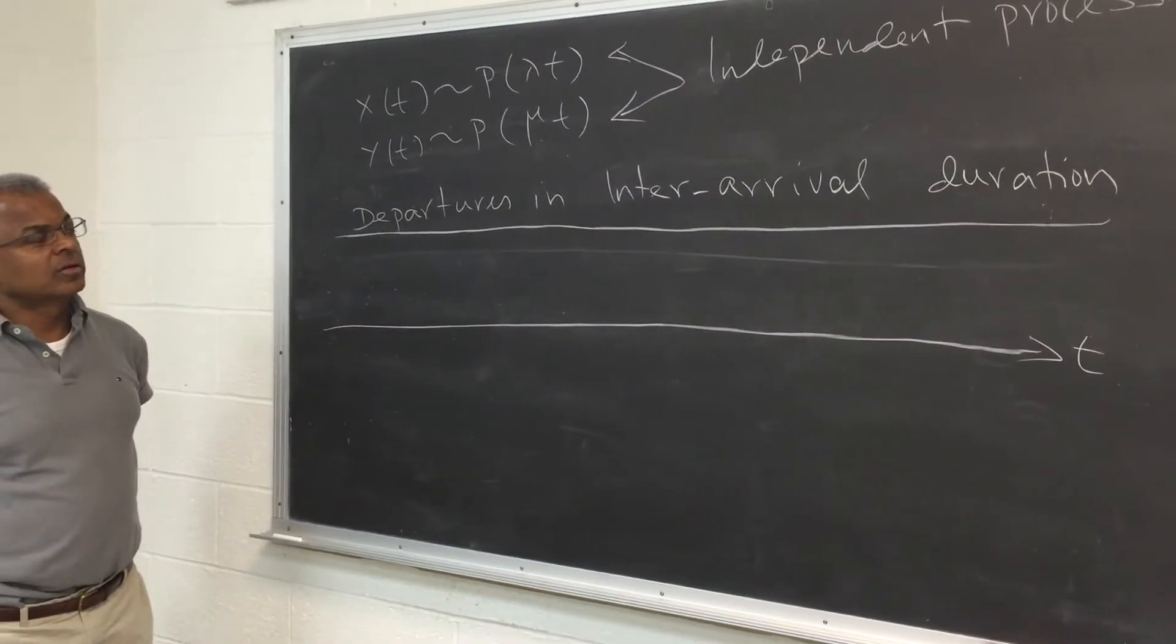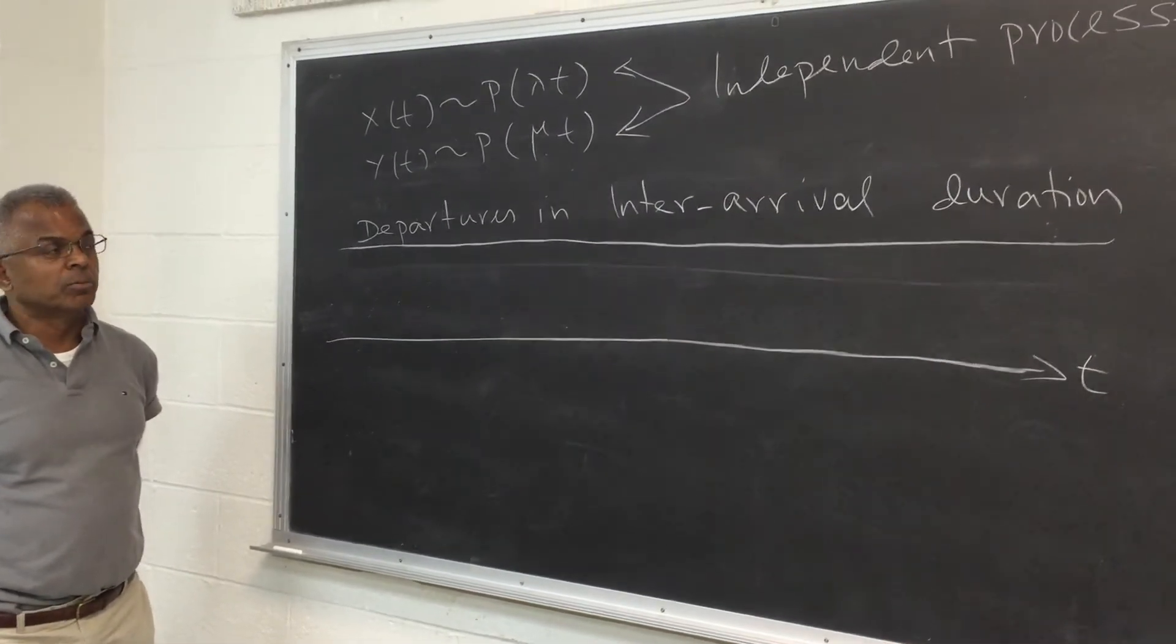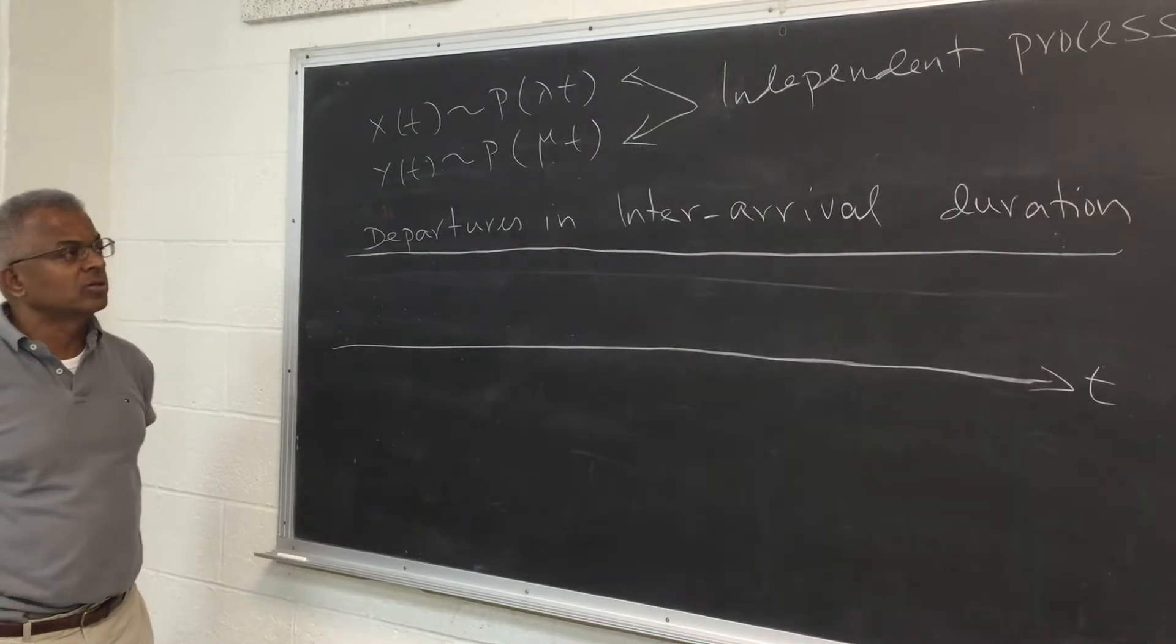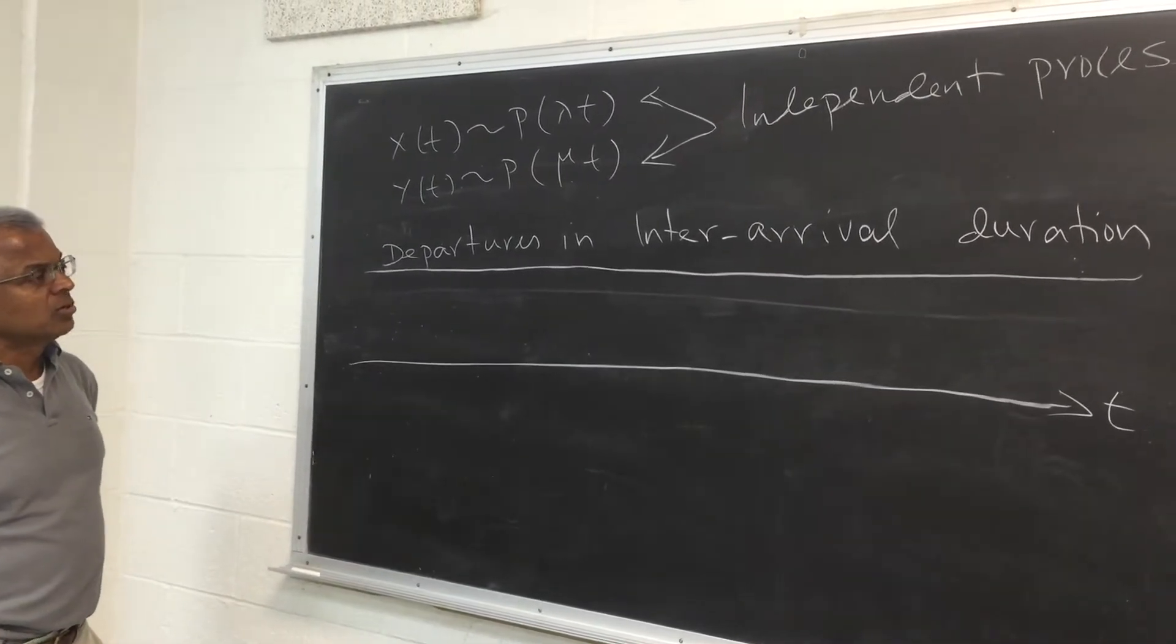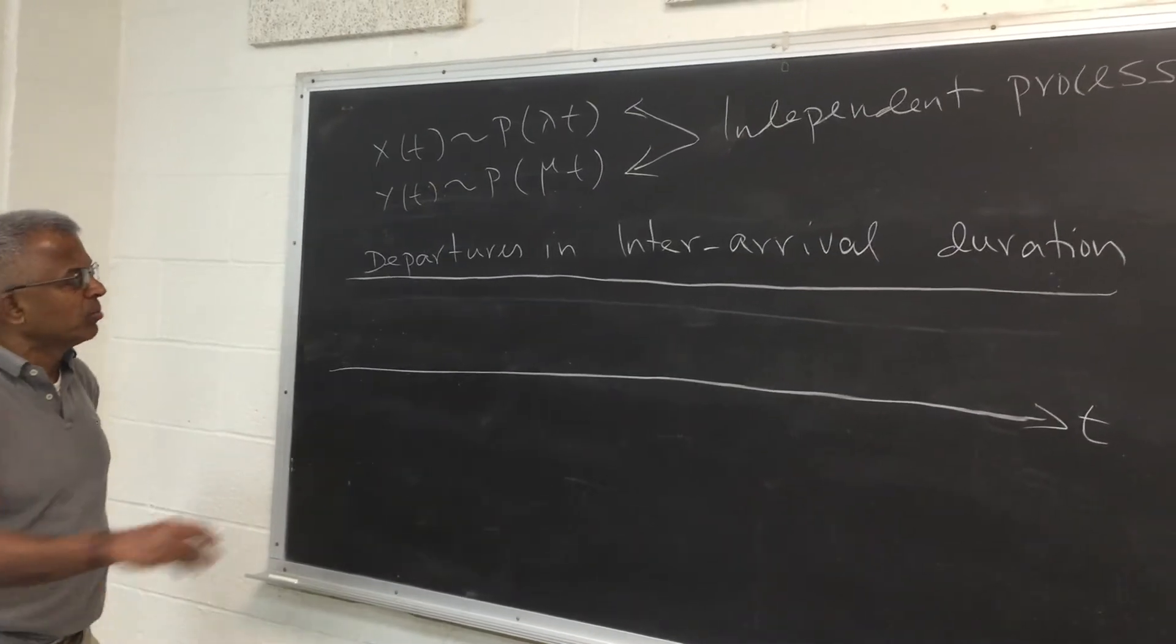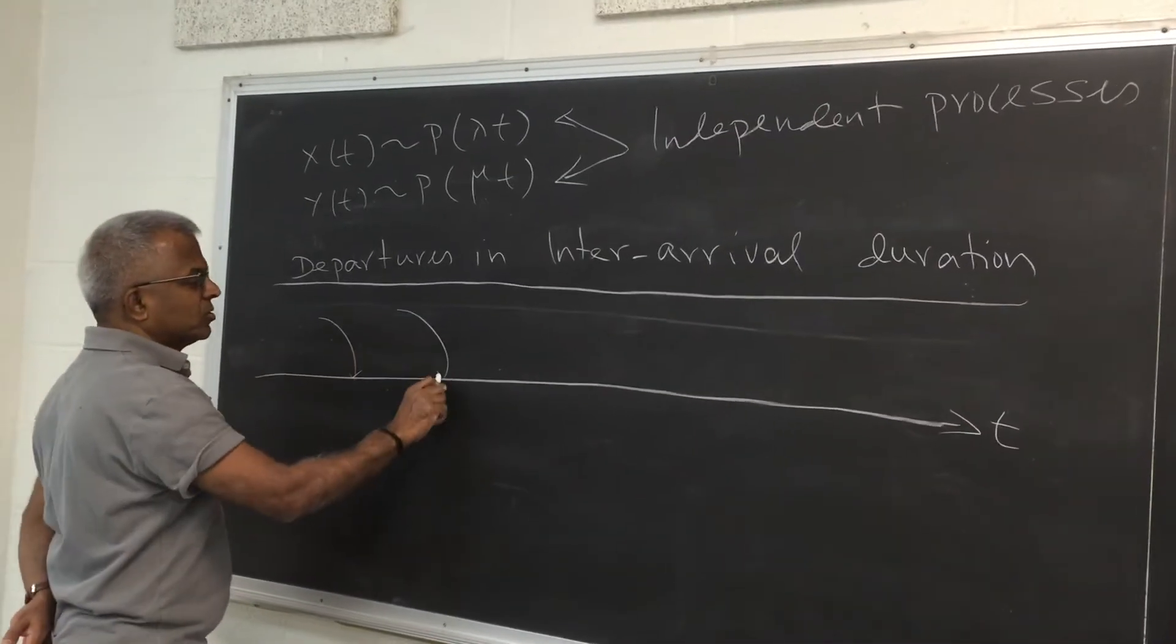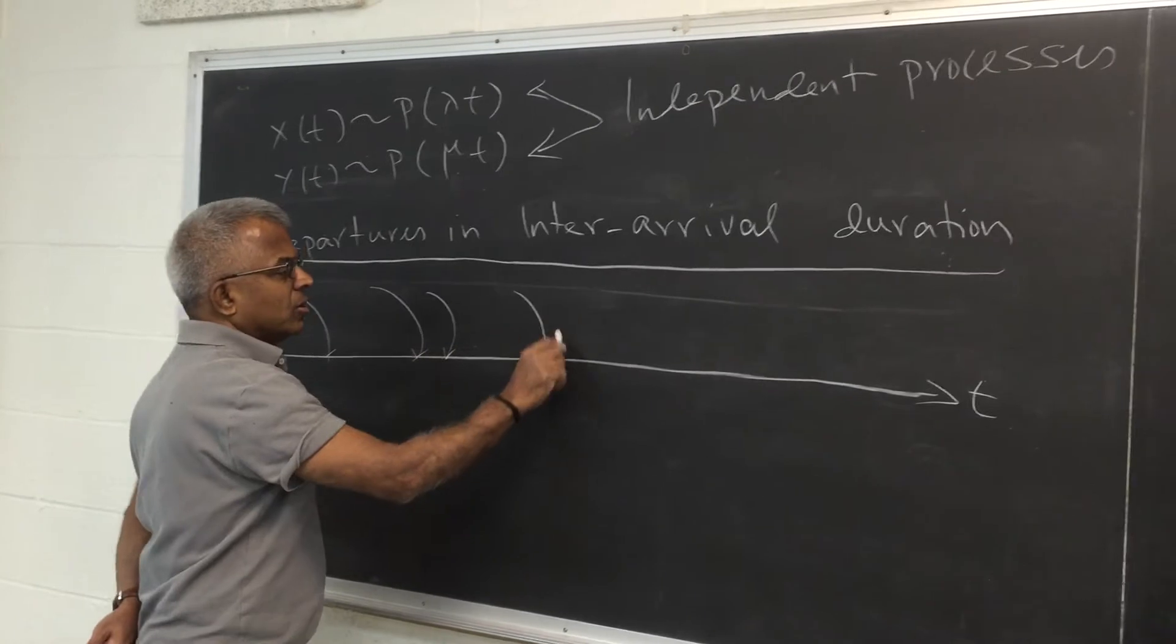Alright, so let's look at some interesting properties of mixing up Poisson processes. This is a very special case. You have two processes, one of them you can think of as an arrival process, x of t, things are arriving.